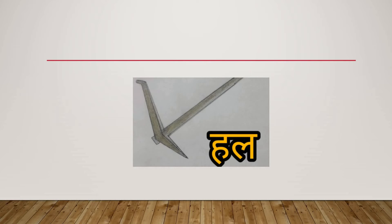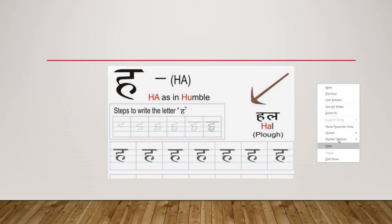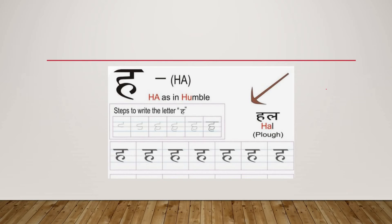Let us see how to write ha. Ha is a pluff. See, one line is a pluff, then a small curve. This is ha. Ha says hull.